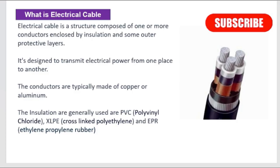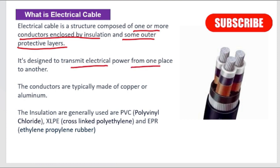Now coming to this lecture — what is an electrical cable? An electrical cable is a structure composed of one or more conductors enclosed by insulation and some other protective layers. It is designed to transmit electric power from one place to another. The conductors are generally made up of copper or aluminum.